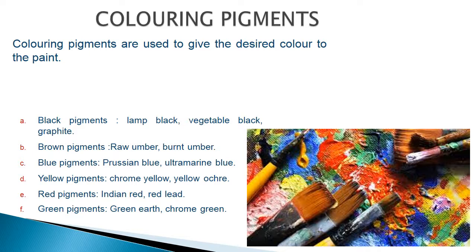Coloring pigments are used to give the desired color. These can be black, brown, blue, yellow, red, and green pigments — the color developed depends on the pigment used. For black, examples include lamp black, vegetable black, and graphite black, and similarly for other colors.